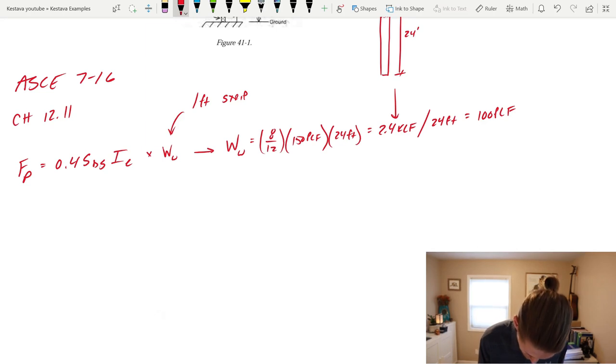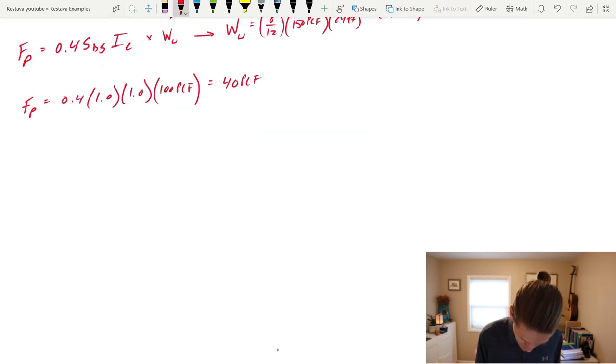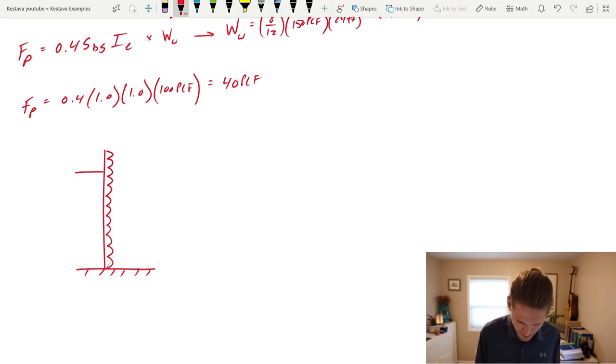Next, let's plug that in for F sub P. So, F sub P equals 0.4. We have 1.0 for S_DS, and we have 1.0 for the importance factor. That makes it easy. And then, multiply our 100 PLF for our weight of wall. That's just going to equal 40 PLF. That gets us looking like this. There's our roof, there's our parapet, there's our ground. And again, these are out of plane forces. So, this is like if wind were to be hitting the side of a house or something, that's out of plane forces. That's forces hitting perpendicular to your wall. That was F sub P, which equals 40 PLF.